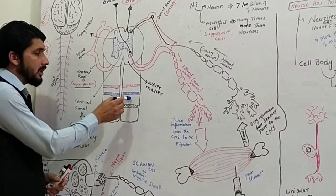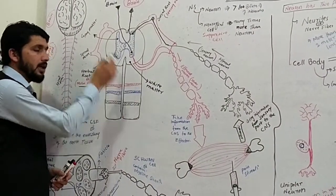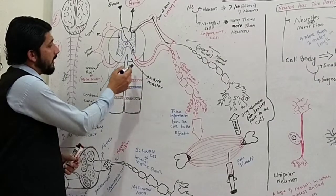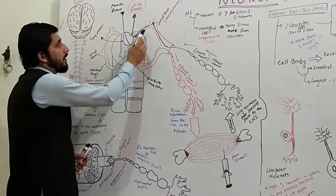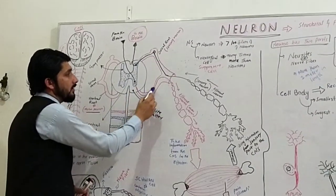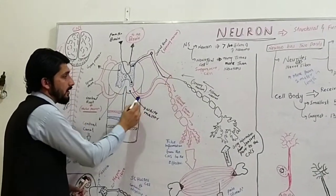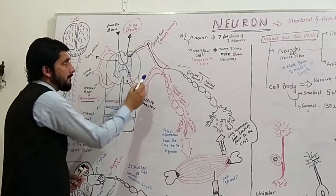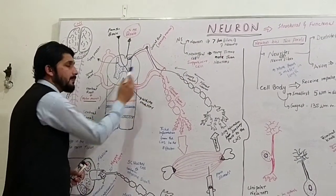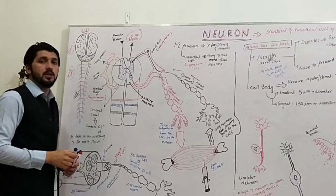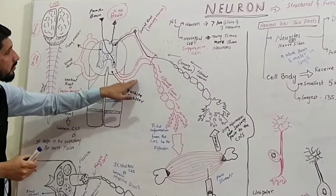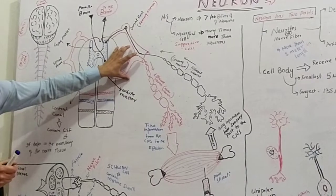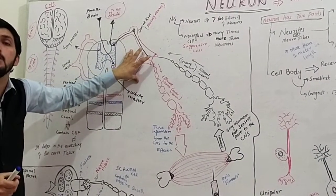The three meningeal layers are the dura mater, the arachnoid mater, and the pia mater. The spinal cord gives rise to spinal nerves through dorsal roots and ventral roots. The dorsal and ventral roots of the spinal nerves form the peripheral nervous system.